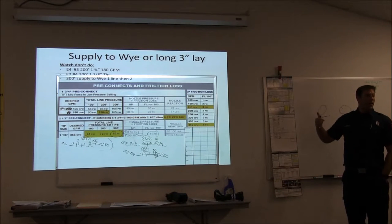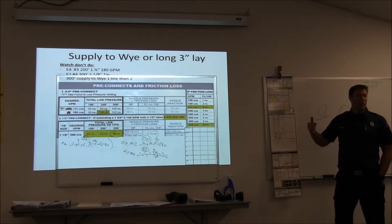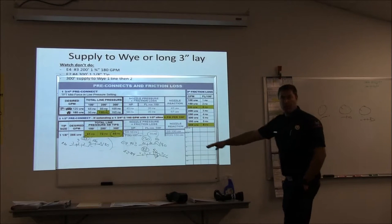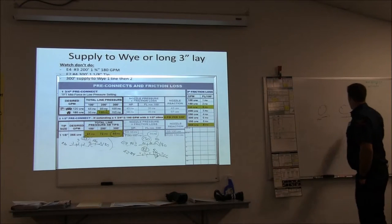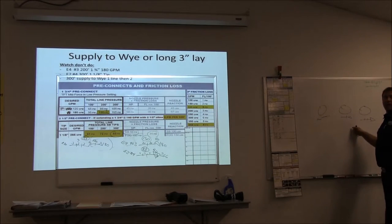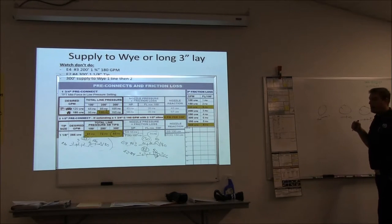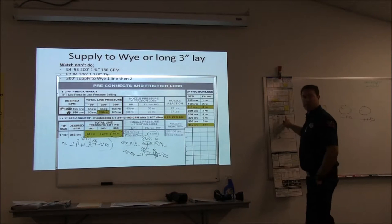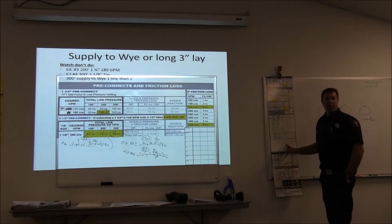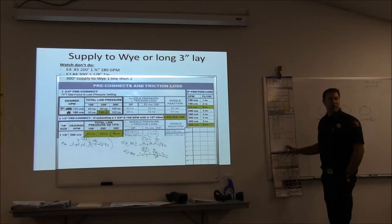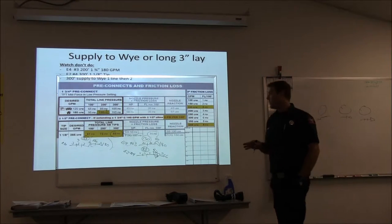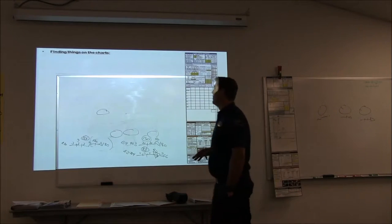The process is: draw your problem, mark your gauge, charge your line, then come back to the table and check for mistakes and make adjustments as needed. You guys will get a lot of practice with this — you'll be comfortable with it by the end.